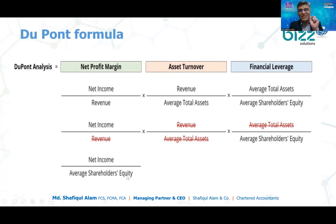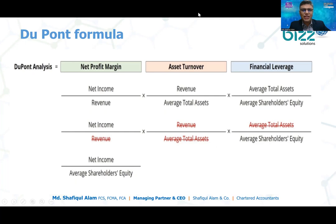The net line — ROE is net income divided by average shareholders' equity. Using the DuPont framework, ROE equals net profit margin multiplied by asset turnover multiplied by financial leverage. Net profit margin is net income divided by revenue, and asset turnover is revenue divided by average total assets.